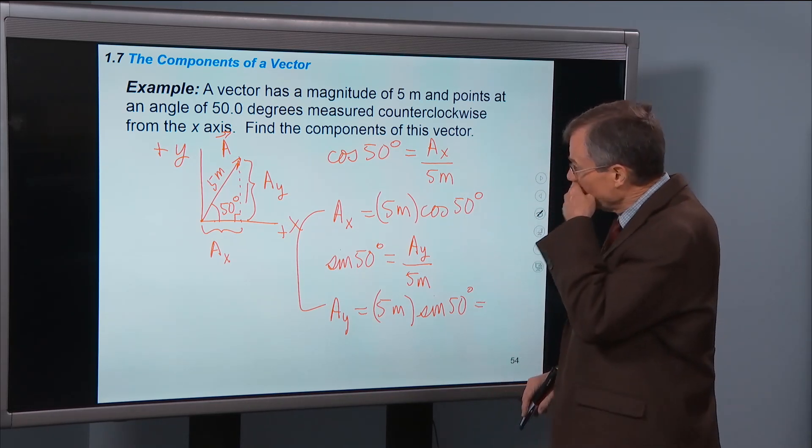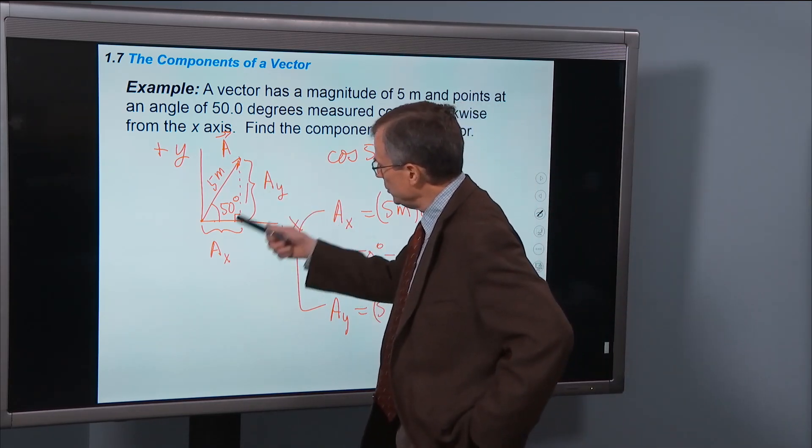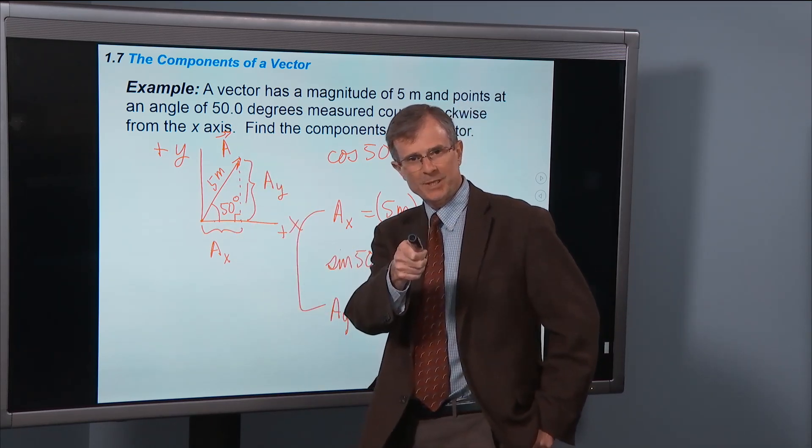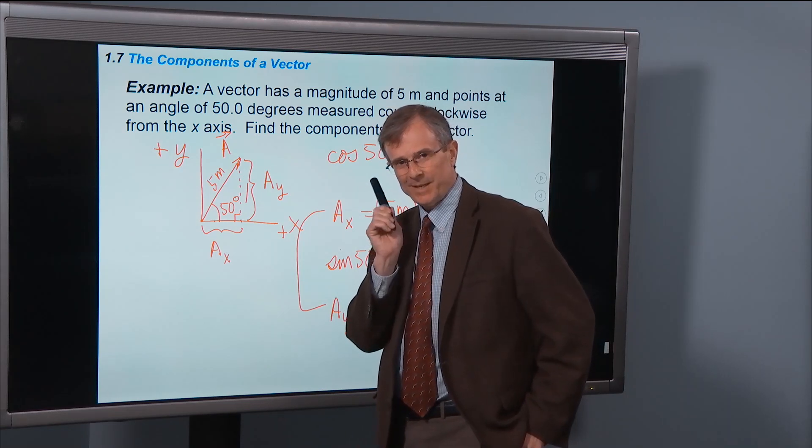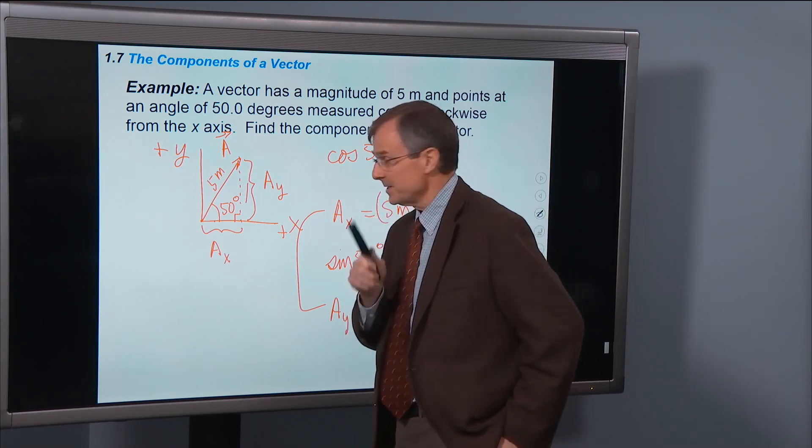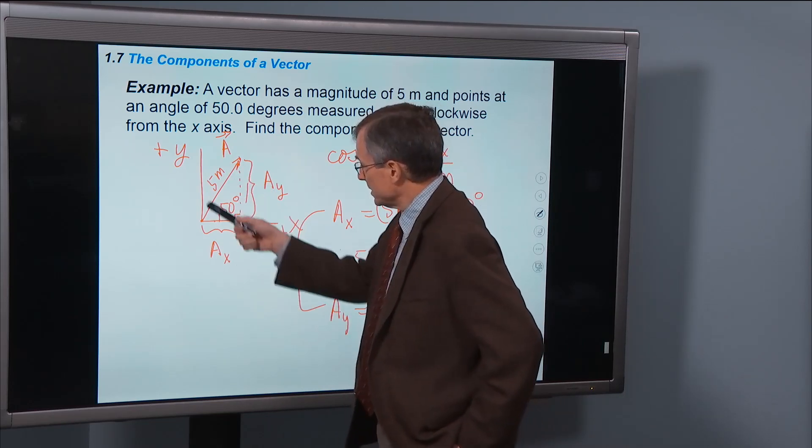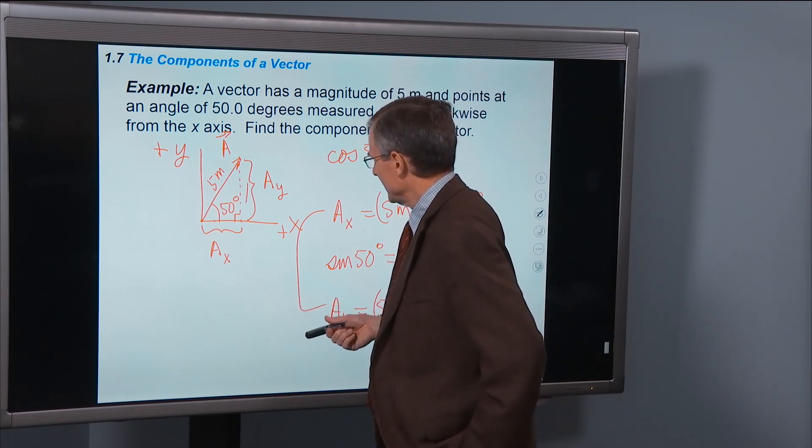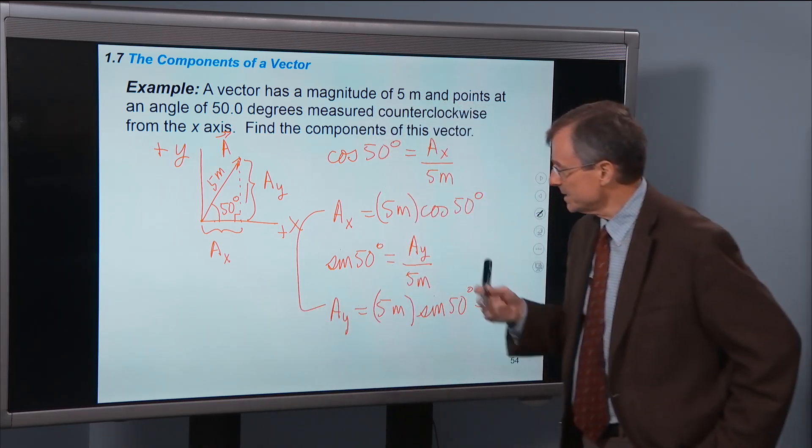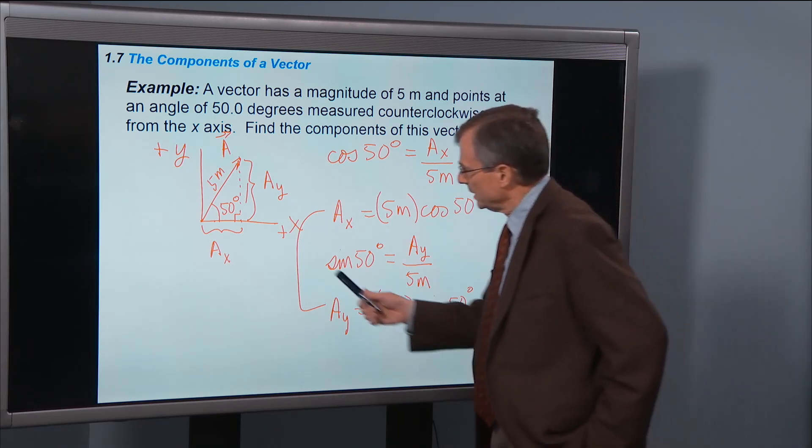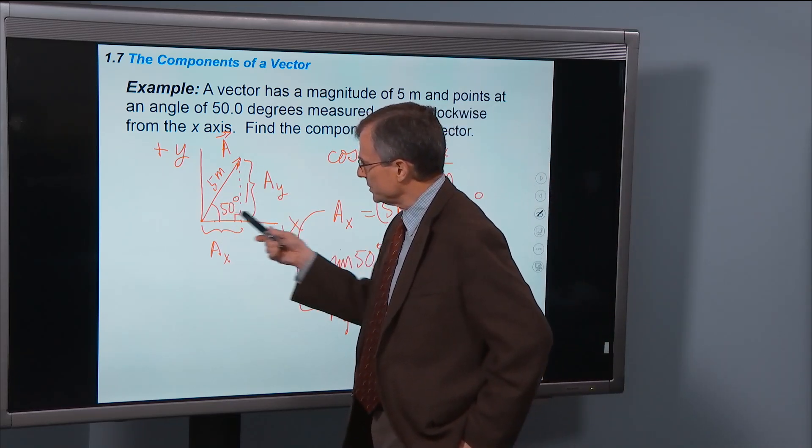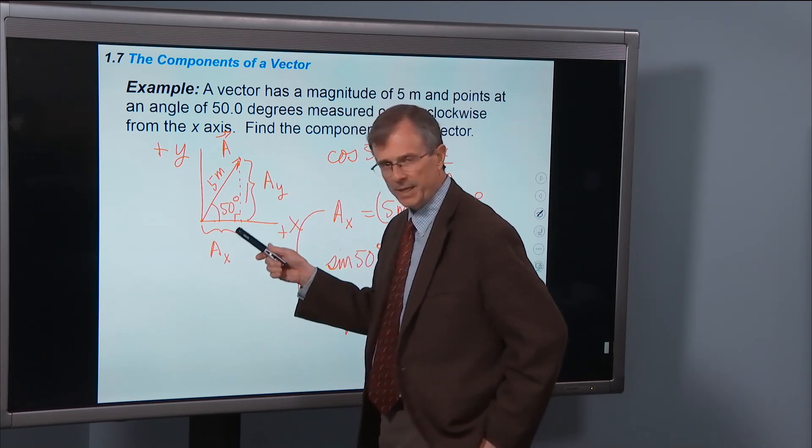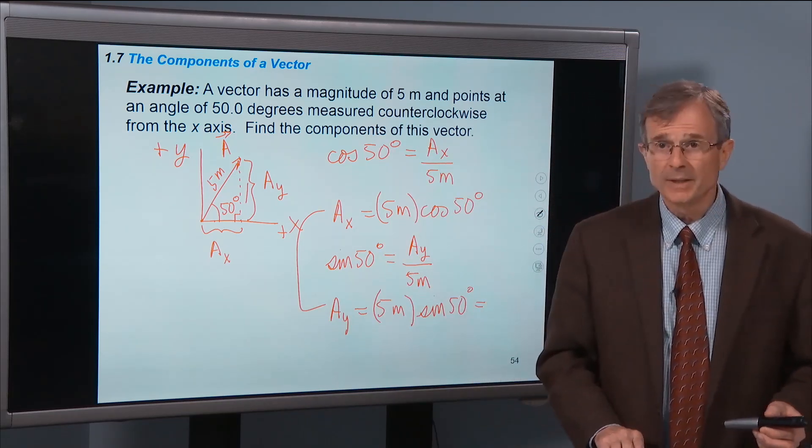You can also do it the other way. If you knew Ax and Ay and you wanted to find the magnitude of the vector, how would you do it? You say, I think I can use the Pythagorean theorem, can I? And I say yes you can, because this hypotenuse squared equals this side squared plus this side squared. And that's how to find the magnitude. How to find the angle? If you didn't know the angle but you did know these two sides, then you can take the tangent of that angle equals Ay over Ax. Take the inverse tangent to find the answer.